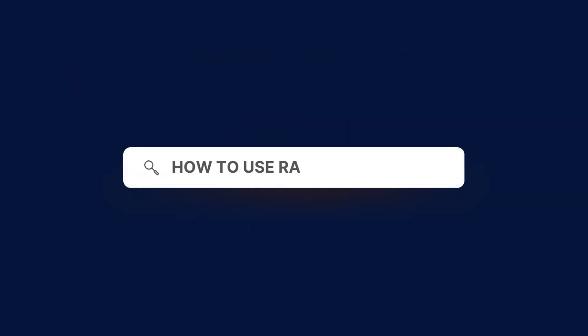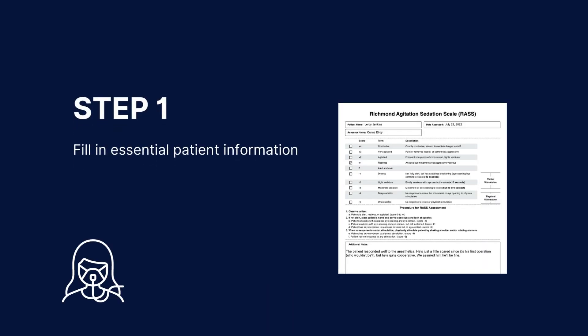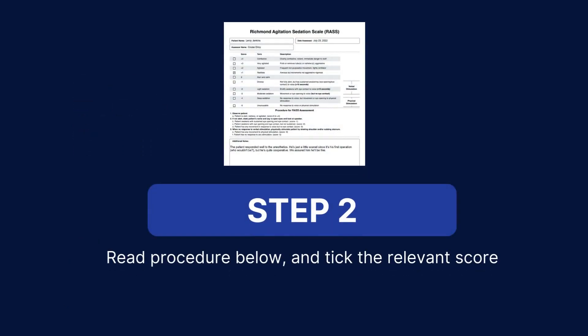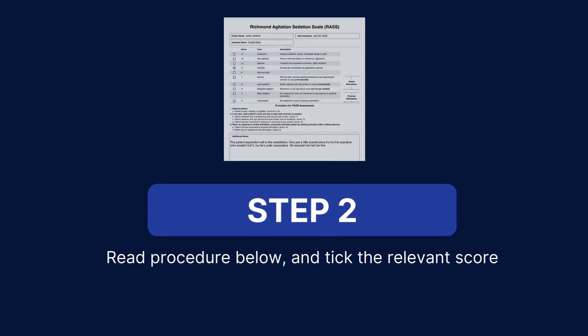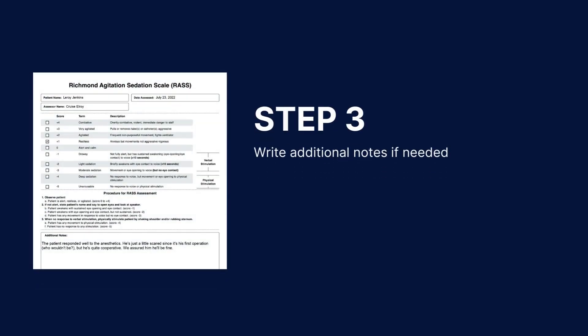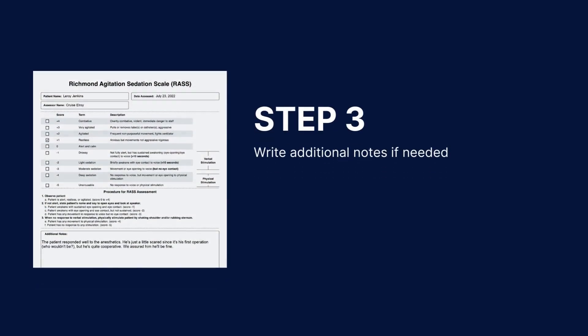Here's how to use the RAS assessment effectively. The first step is to fill in essential patient information. The second step is to read the procedure and then tick the relevant scores while monitoring the patient. The final step is to write any additional notes if needed.